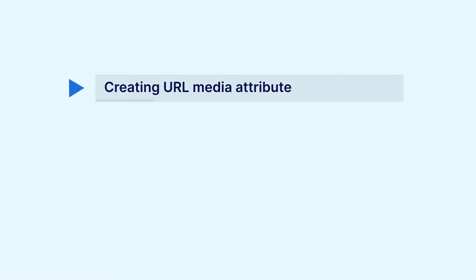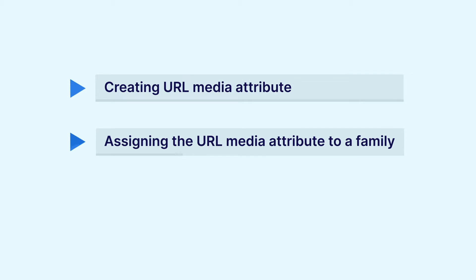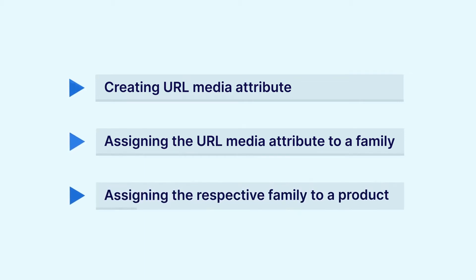In today's tutorial we'll be checking out the procedure in the Akinio admin backend panel — how to create the URL media attribute, how to assign it to a particular family, and then how to assign it to a particular product when creating the product using that assigned family.